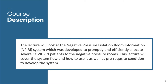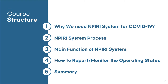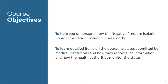This lecture will cover the system flow and how to use it, as well as the prerequisite conditions to develop the system. This course consists of the contents listed above, and I will explain each topic in order, from the requirements to build the system to how to use the monitoring function. The purpose of this course is to help you understand how the Negative Pressure Isolation Room Information System in Korea works.